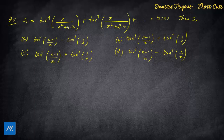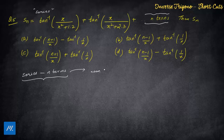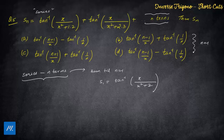The last problem is again a series problem. For series up to n terms, there is another method: find the sum for n = 1. This means only the first term should appear. If S₁ = x/(x² + 2), then put n = 1 into each answer option and whichever gives this result is the correct answer.